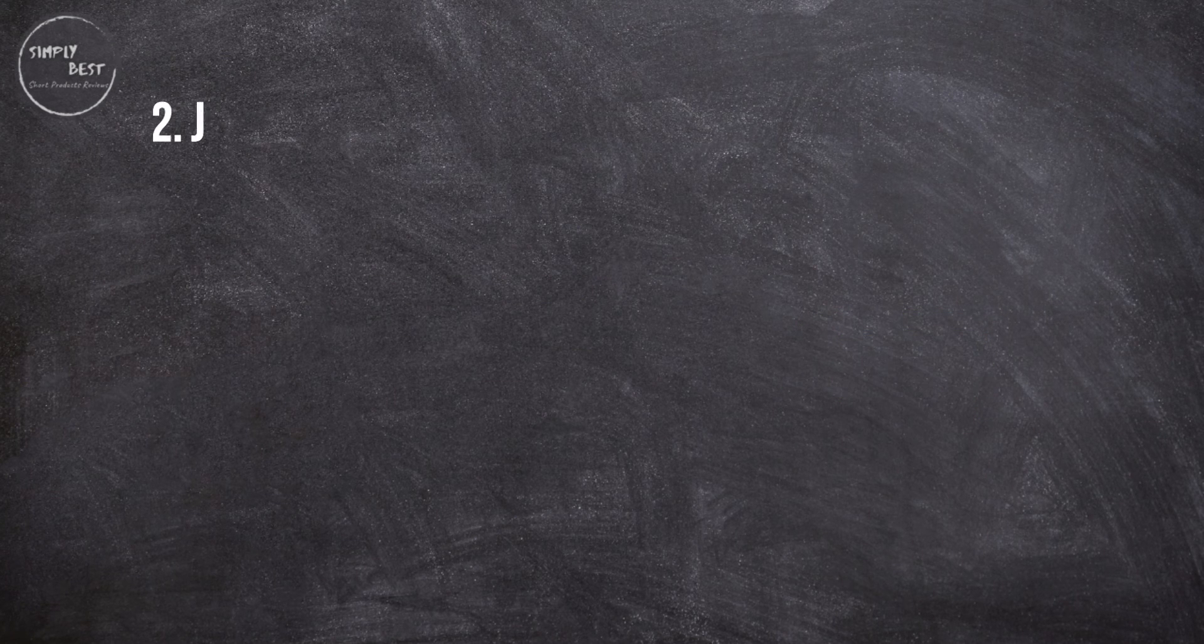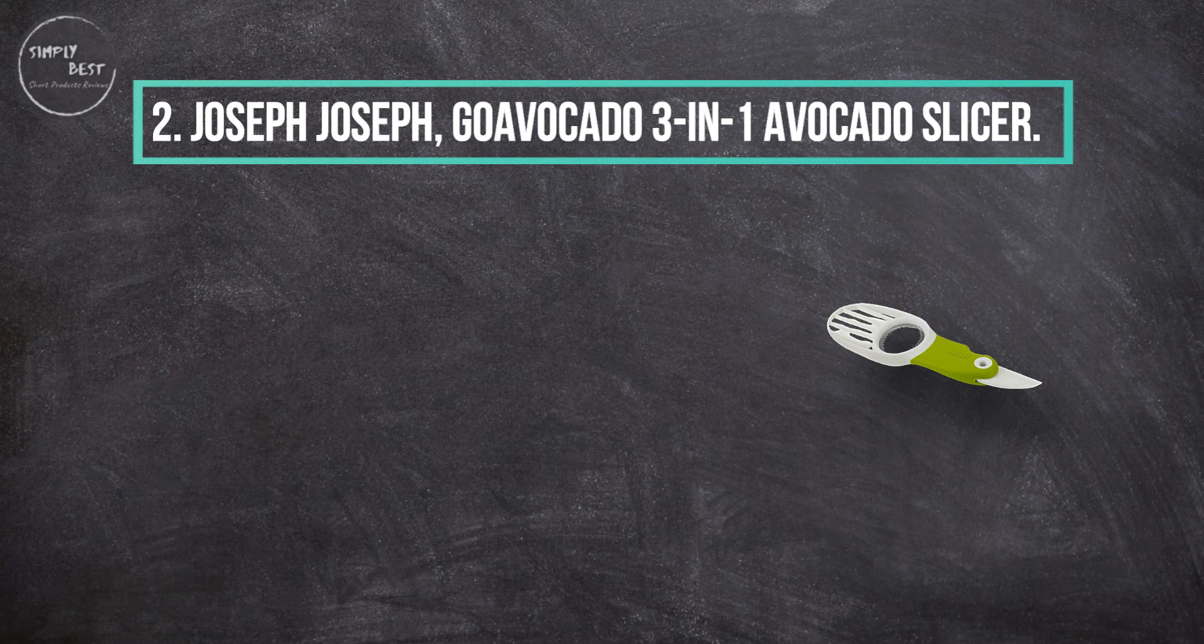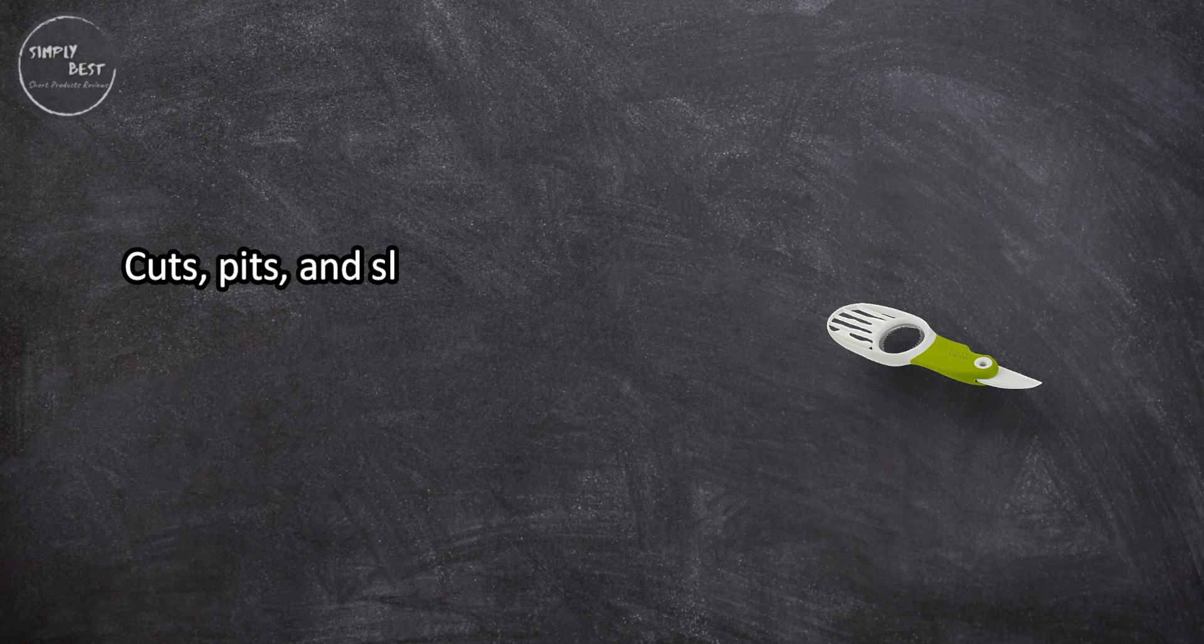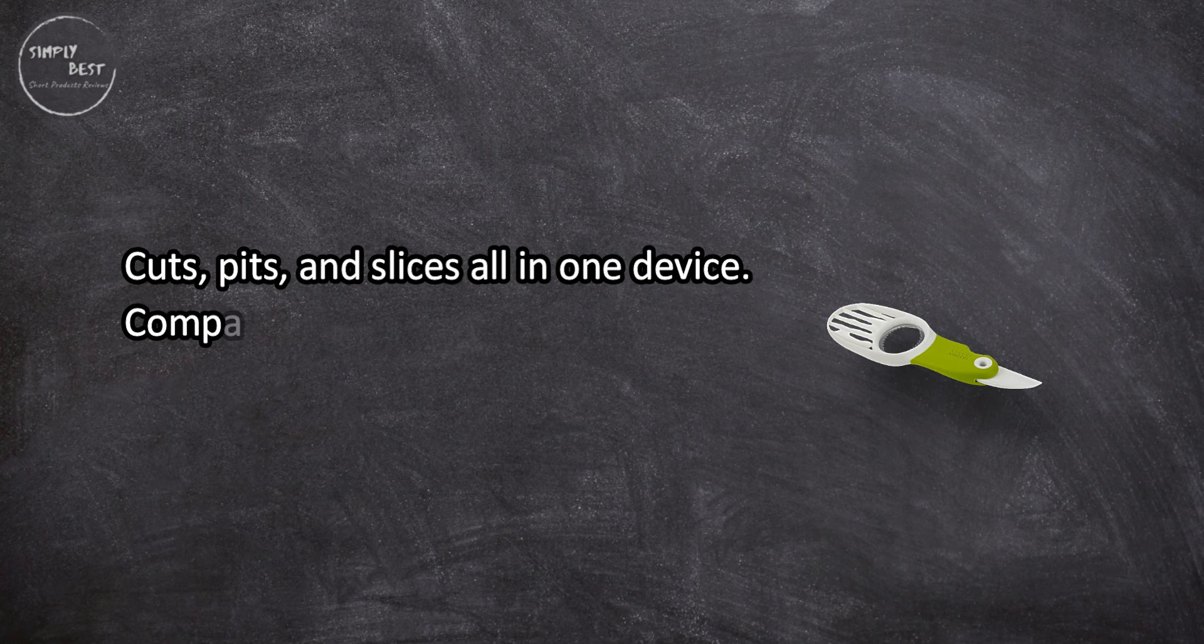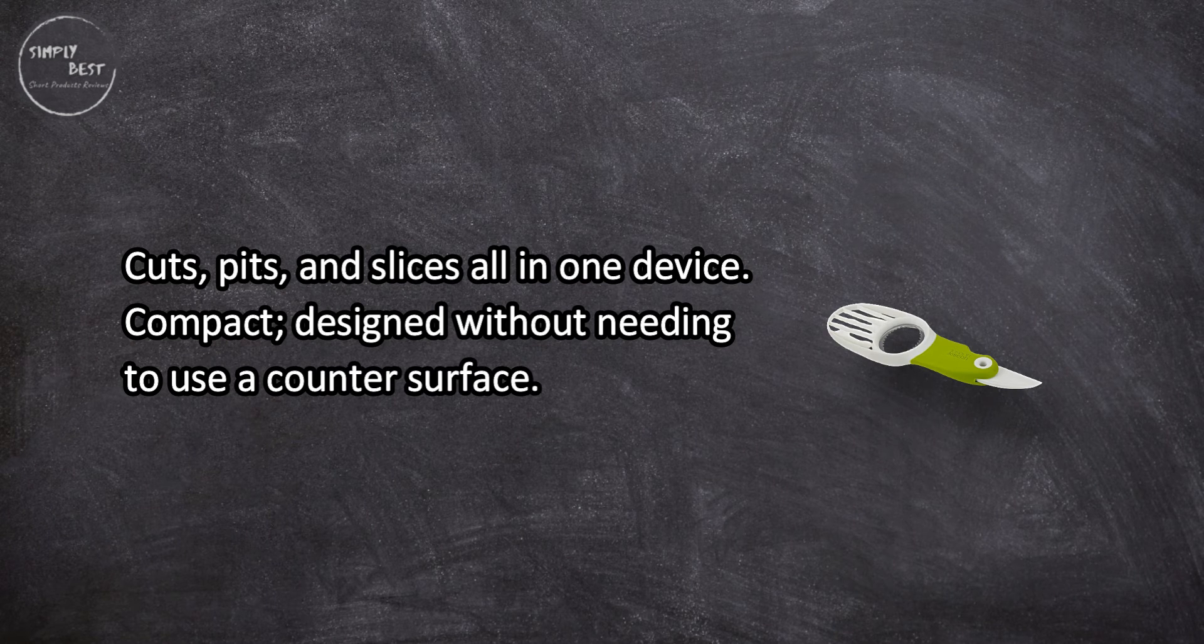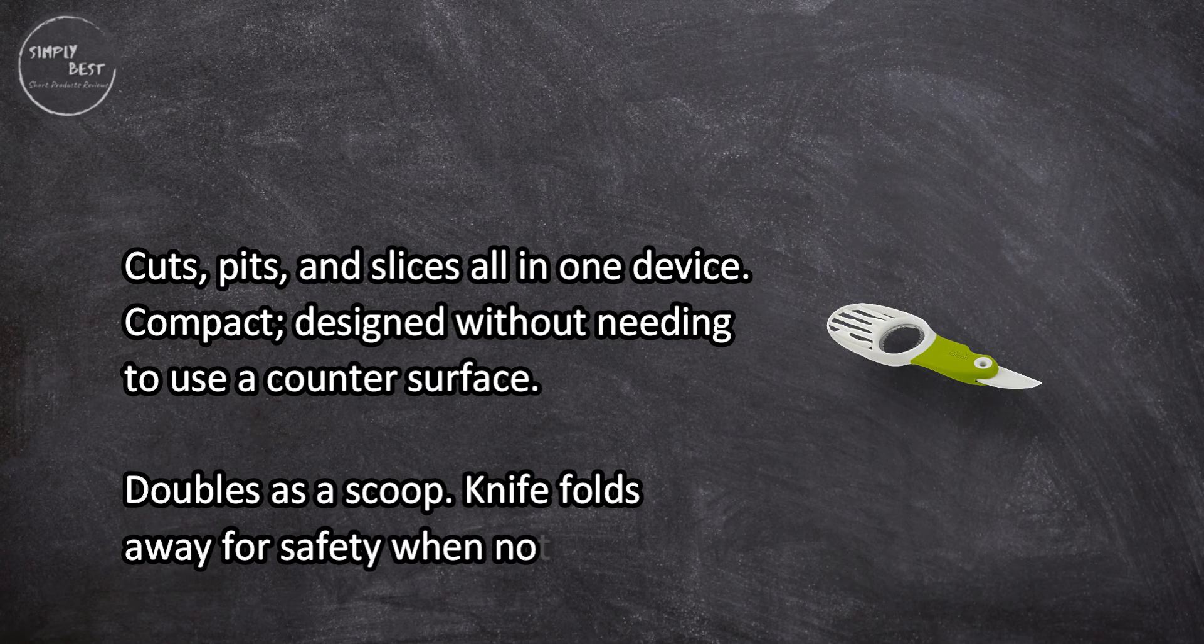At number two, Joseph Joseph Go Avocado three-in-one avocado slicer. Cuts, pits, and slices all in one device. Compact, designed without needing to use a counter surface. Doubles as a scoop. Knife folds away for safety when not in use.